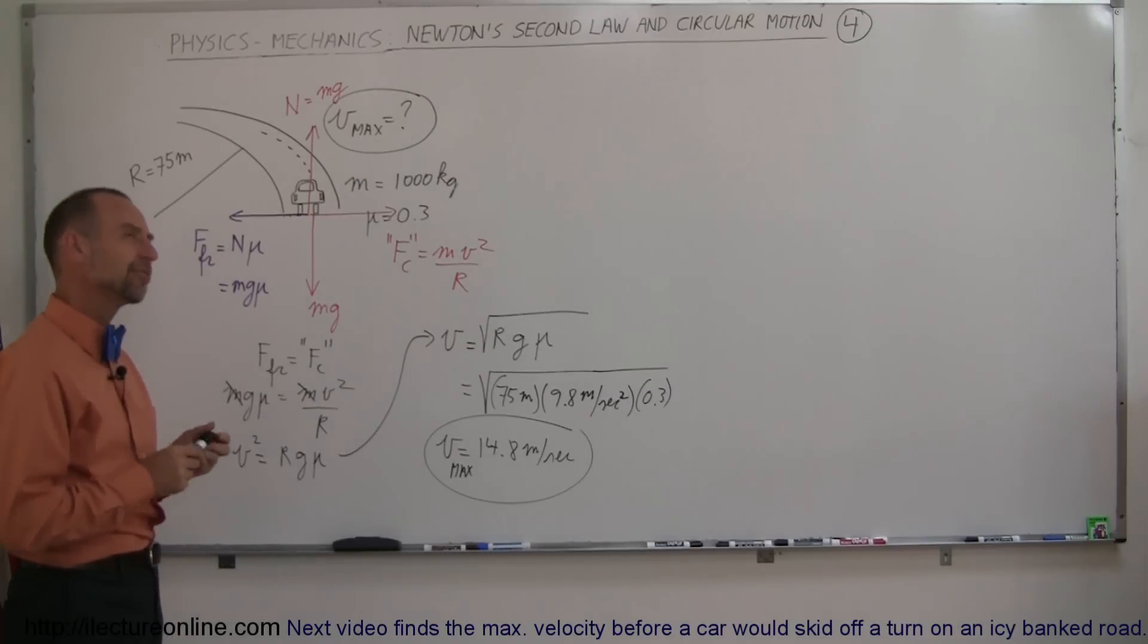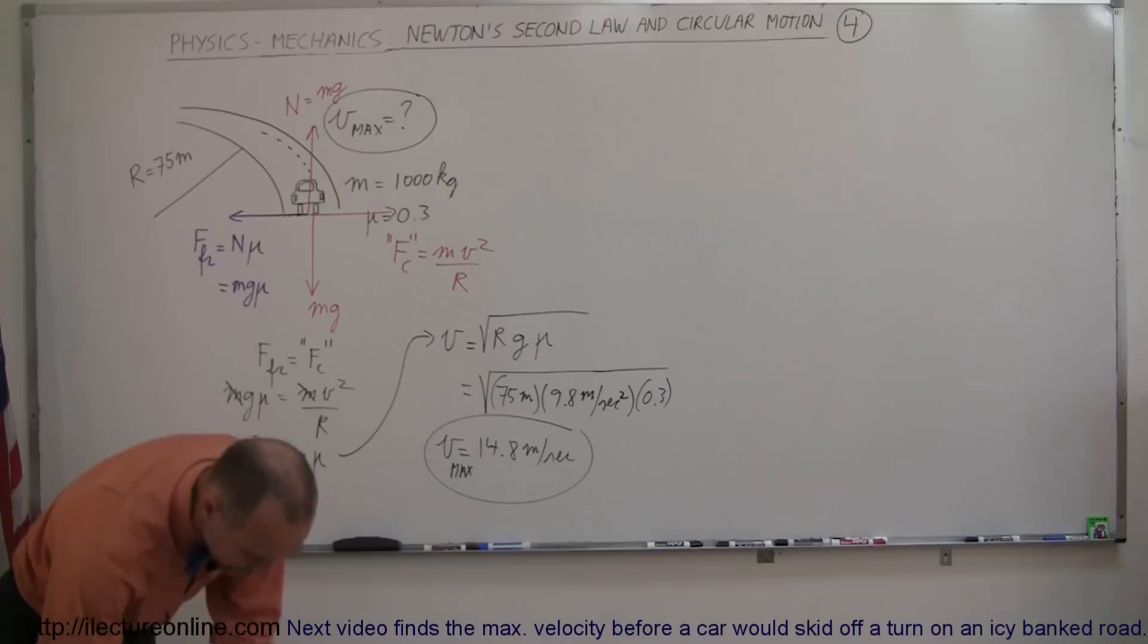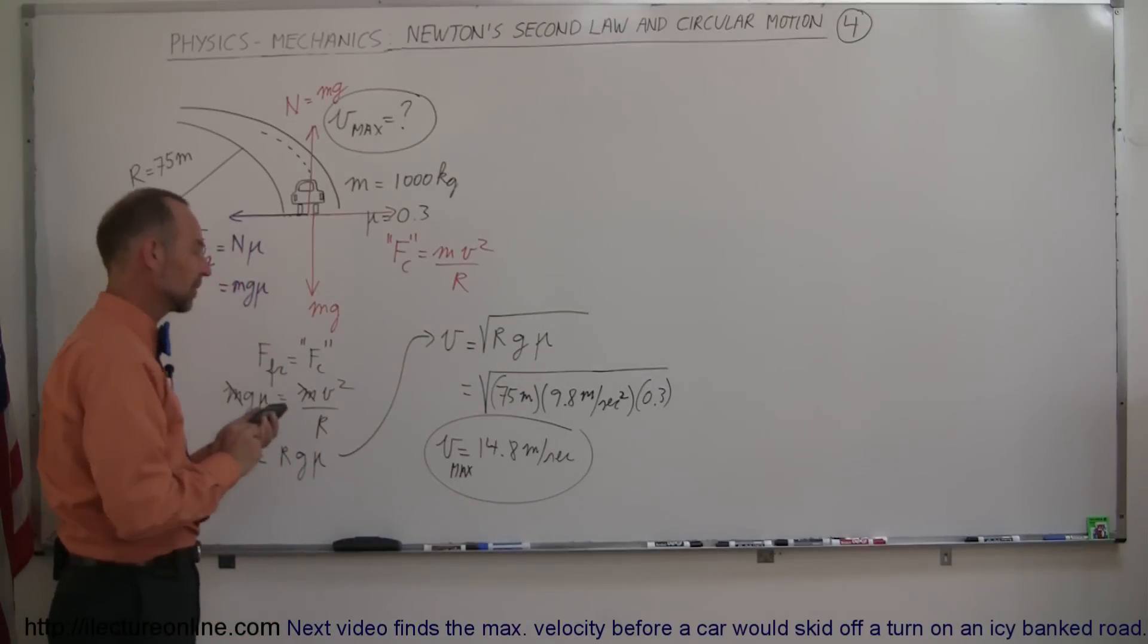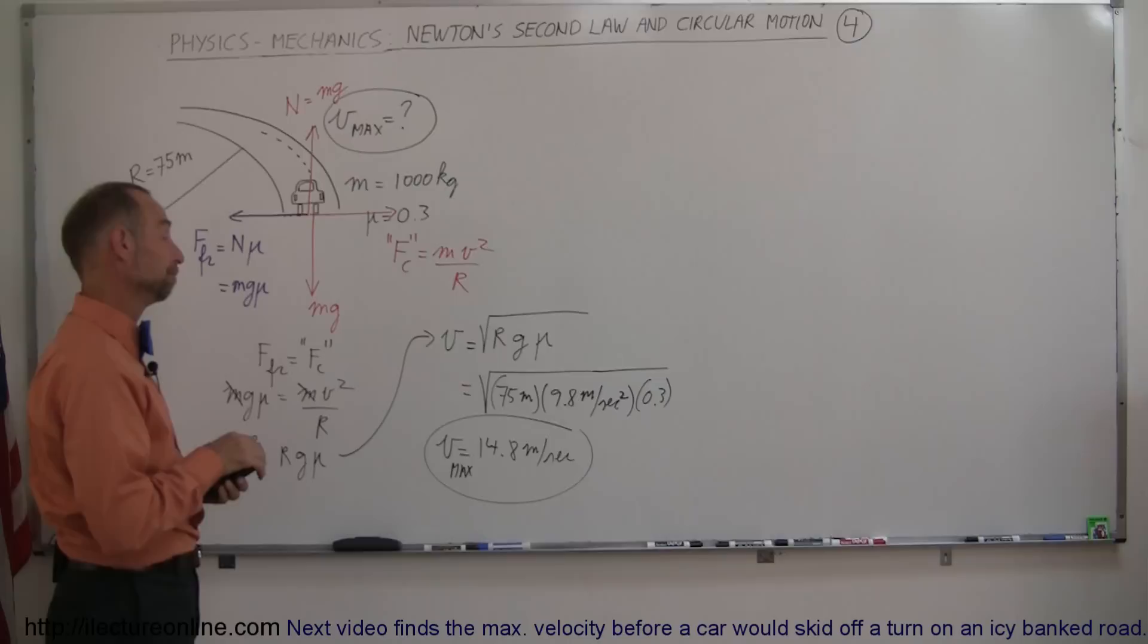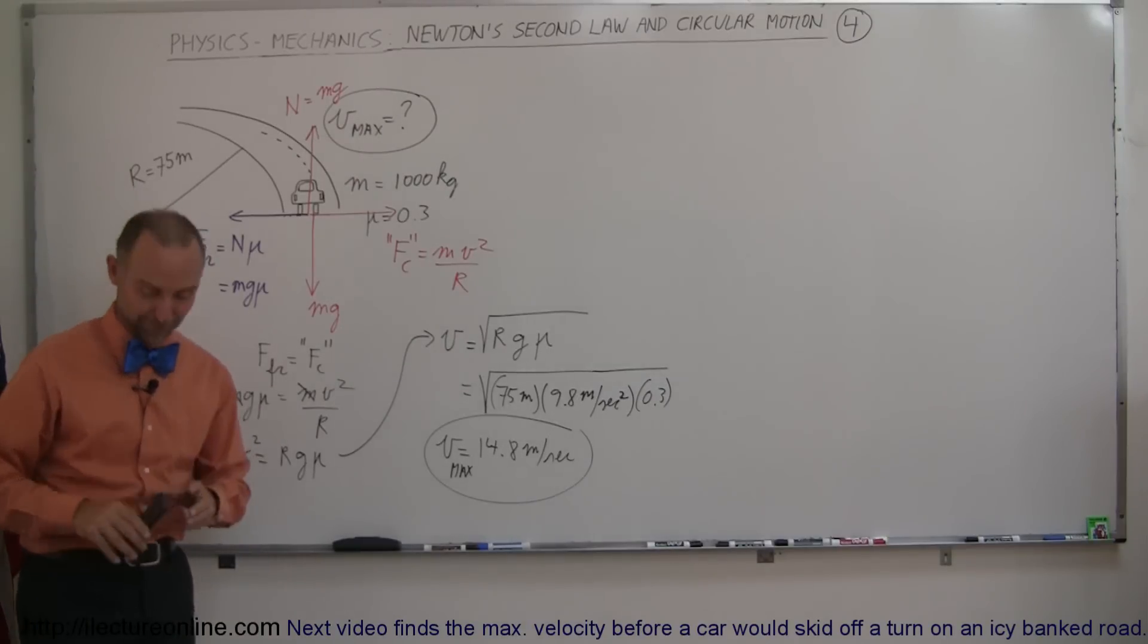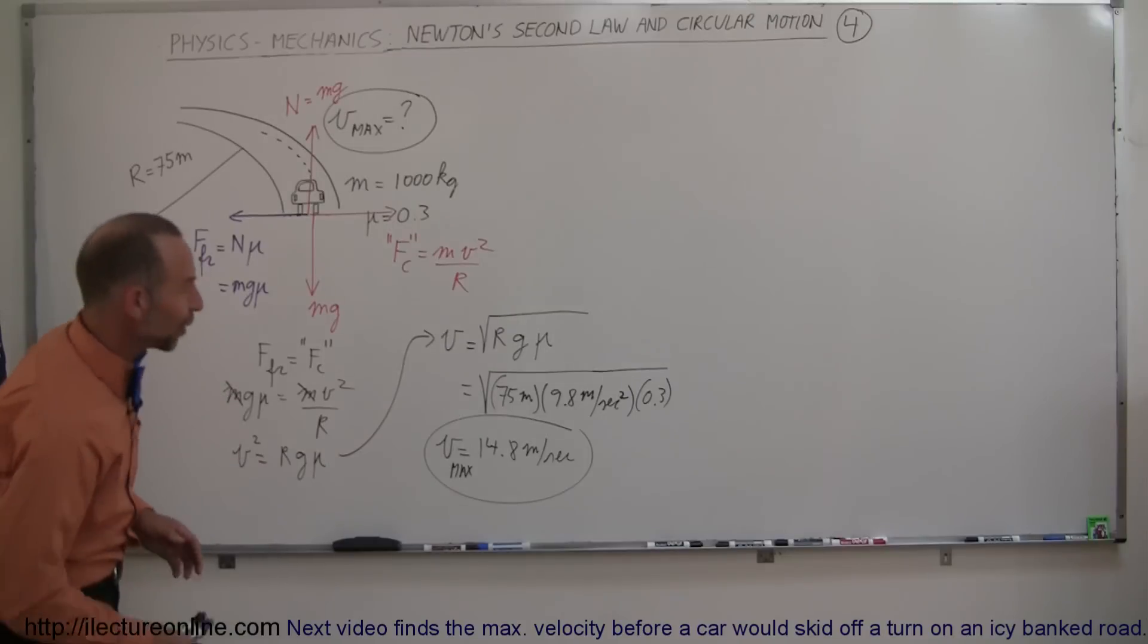How fast is that? 15 meters per second. If we convert that to miles per hour, what do we get? So 14.8 times 3,600 divided by 1,609. That's 33 miles per hour. That's not very fast. So when you hit a curve like that, slow down or you might leave the road.